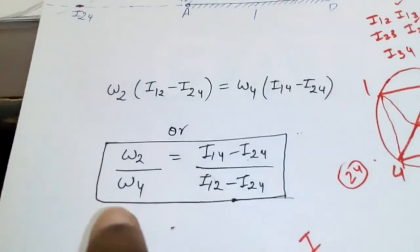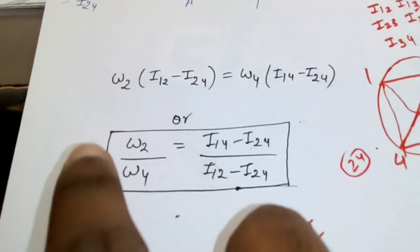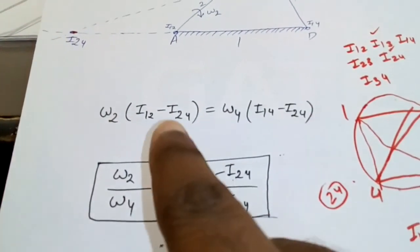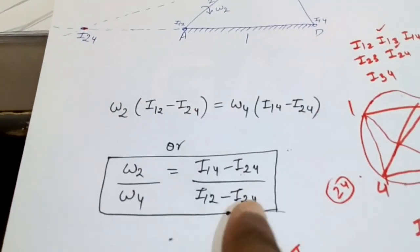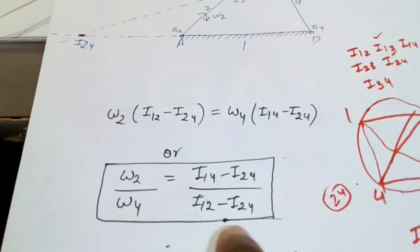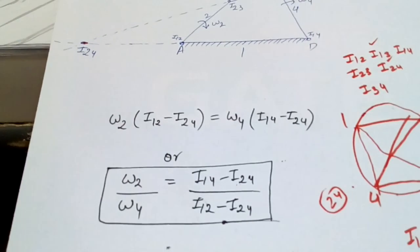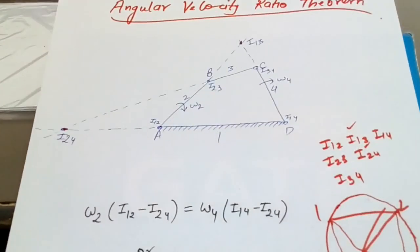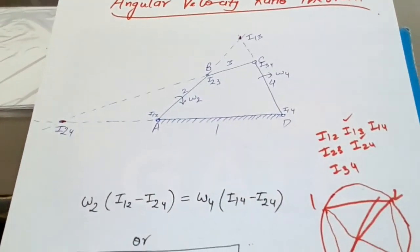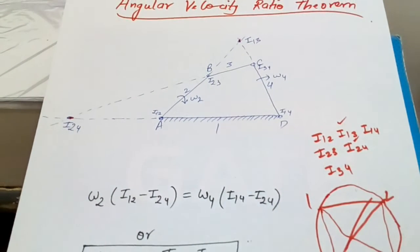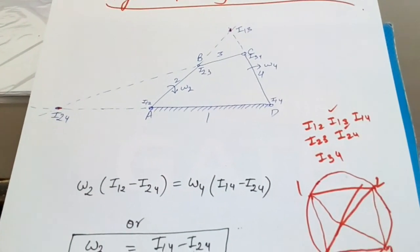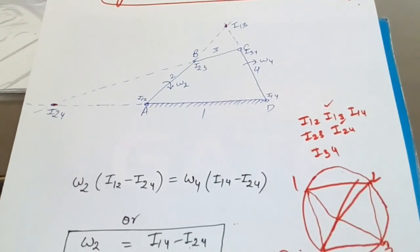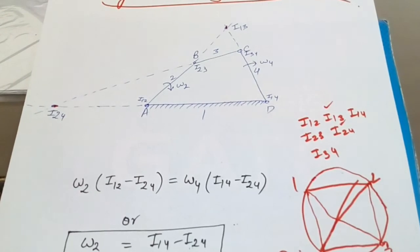The general statement of the theorem is: omega 2 / omega 4 = (distance i14 to i24) / (distance i12 to i24). This was the angular velocity ratio theorem, by which you can easily find the angular velocity of one link if the angular velocity of another link is known.